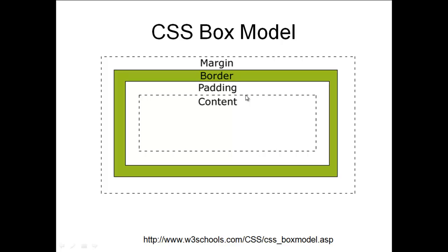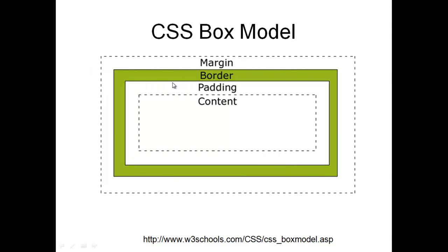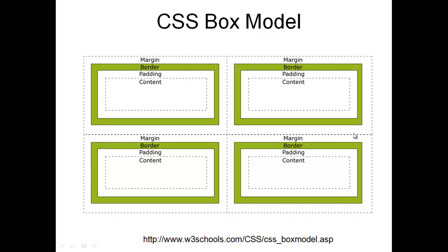The border could be real — something we specify, like two pixels wide, solid, and red — or it could be an imaginary border that's zero. The padding is the spacing between the content and the border. We also have the margin. The margin is the spacing between the border, real or imaginary, and the next element. As an individual box model, this is what you've got.